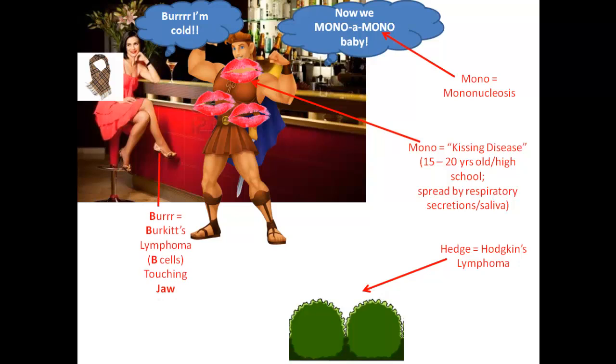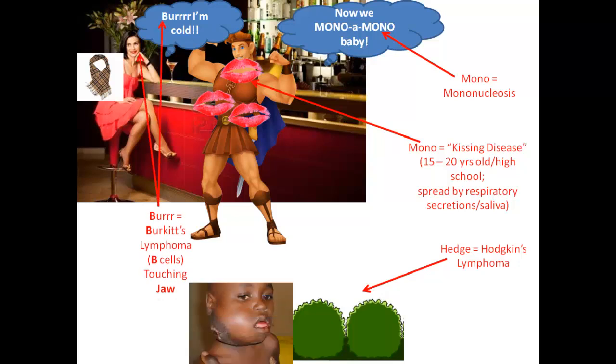Mono is the kissing disease — I'm sure a lot of you in high school probably knew about that. It's going to be about 15 to 20 years old, and that's going to remind you that it's spread by respiratory secretions or saliva. Now she's saying burr, I'm cold, because burr is for Burkitt's lymphoma, and all those bees are going to tell you that Epstein-Barr virus invades B cells.